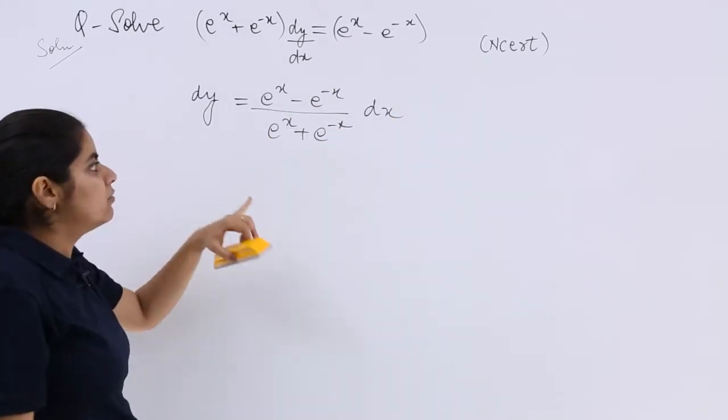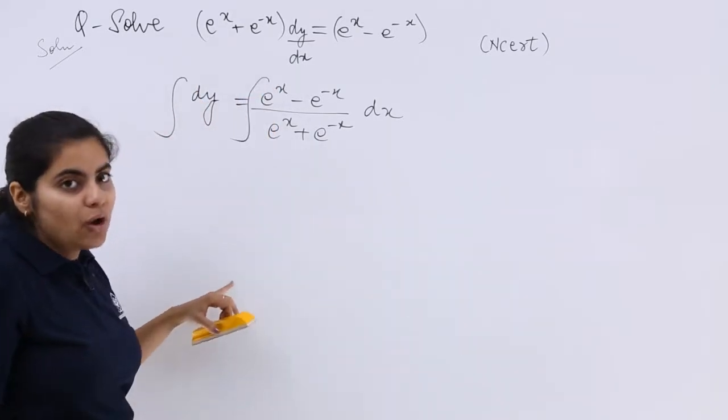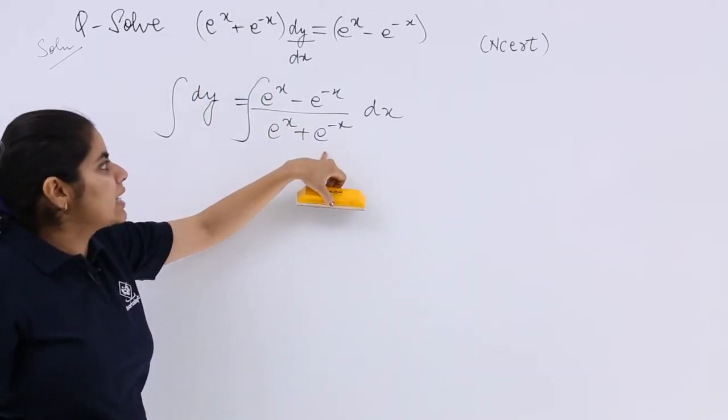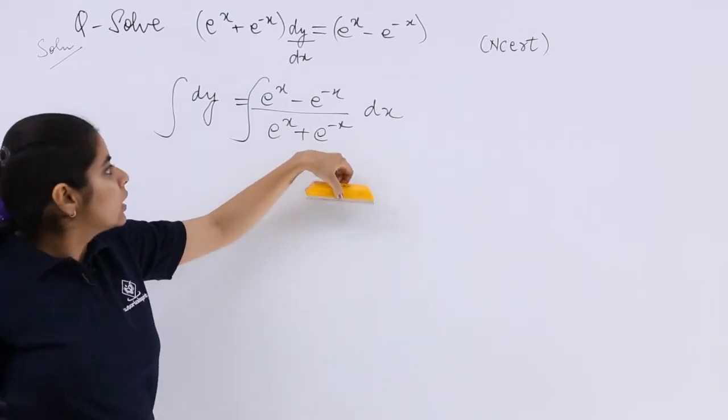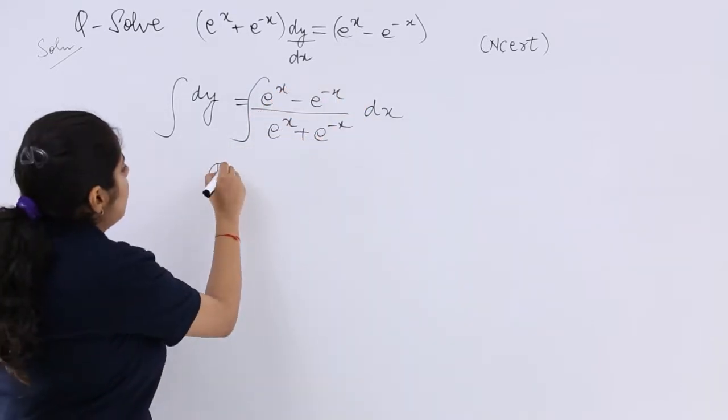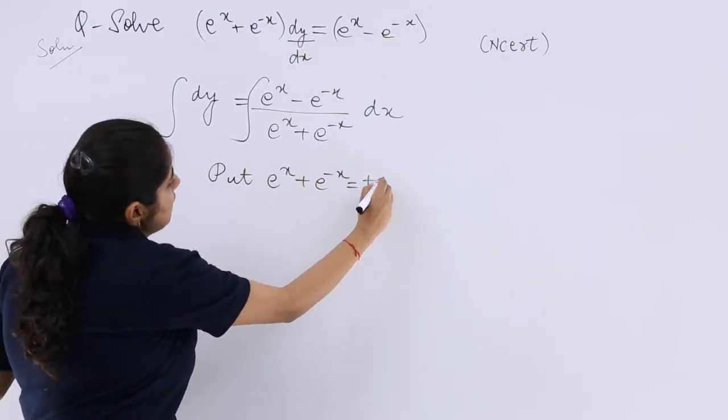Now see, this is in y, this is in x. Let's integrate both sides. You already know that e^x + e^-x if substituted as t, the numerator is dt. So I write: put e^x + e^-x = t.